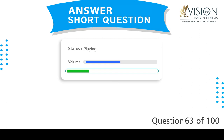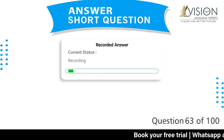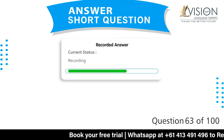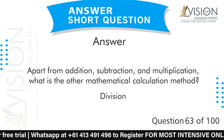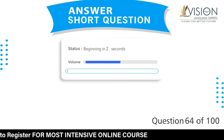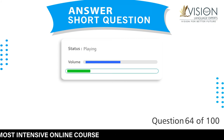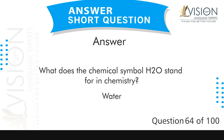Apart from addition, subtraction, and multiplication, what is the other mathematical calculation method? Division. What does the chemical symbol H2O stand for in chemistry? Water.